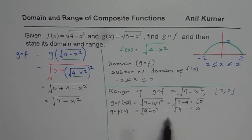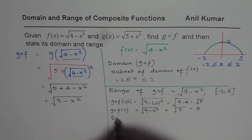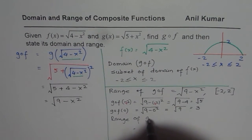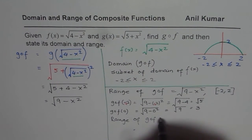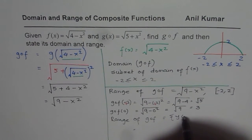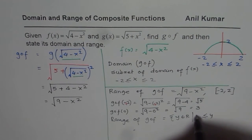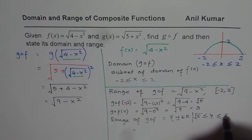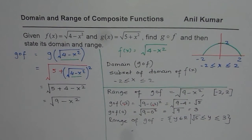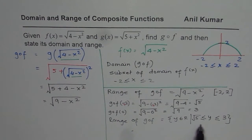So the range of g of f is y ∈ ℝ where the minimum value is √5 and the maximum is 3. That is, √5 ≤ y ≤ 3. So the range of g of f is between √5 and 3.